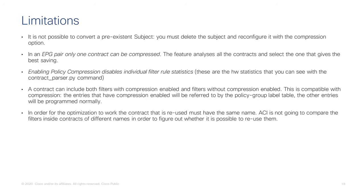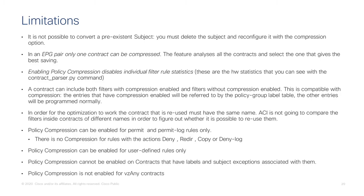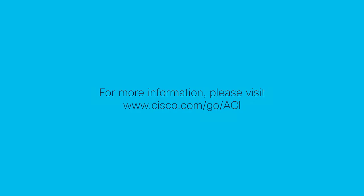For contract reuse compression to work, you need to reuse the very same contract with the same name. ACI will not compare contracts of different names to figure out equivalent filters — you must give contracts the same name and reuse them. Compression can be enabled for permit or permit-plus-log actions, but not for deny, redirection, copy, or deny-plus-log. Finally, you cannot use policy compression for VZAny contracts. And that's all for policy compression.